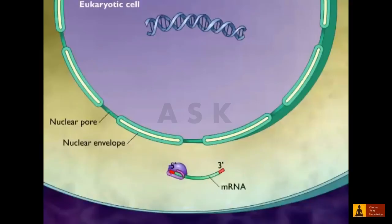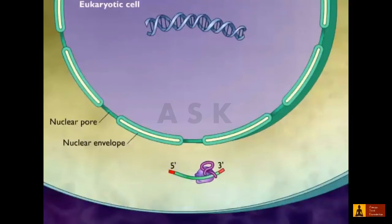In contrast to prokaryotic mRNA, eukaryotic mRNA usually specifies only a single protein.